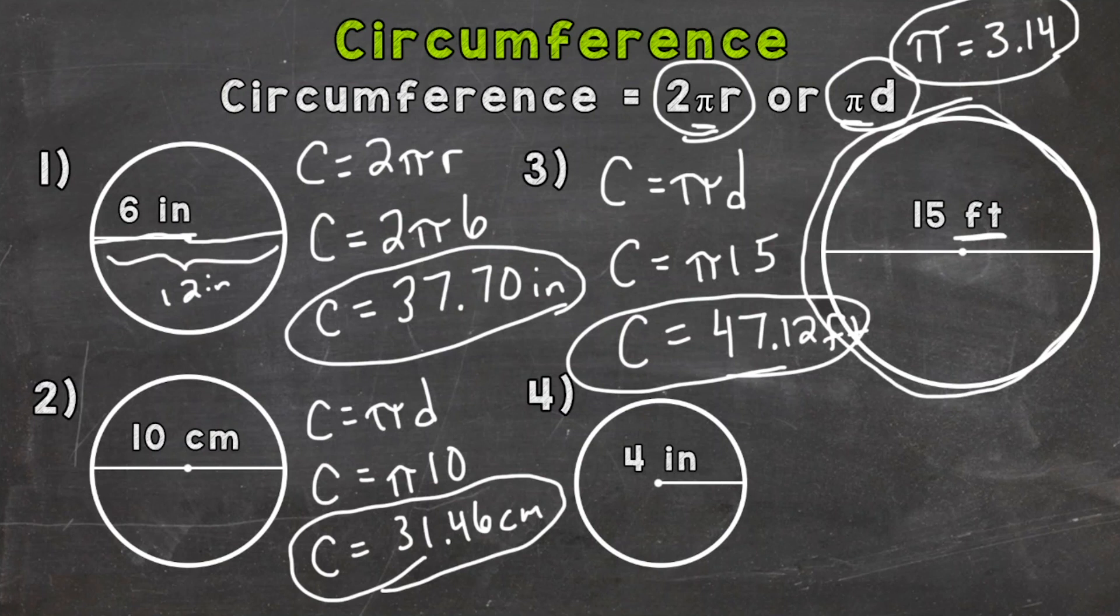Number four, let's start with the formula. Circumference equals 2 times pi times the radius. Then we plug in the radius of 4 inches, so 2 times pi times the 4 inch radius. And we calculate, and we get an answer of 25.13 inches.